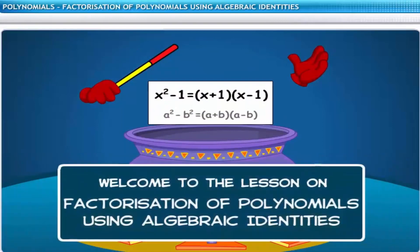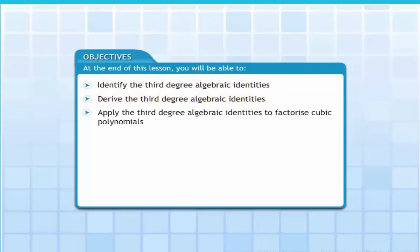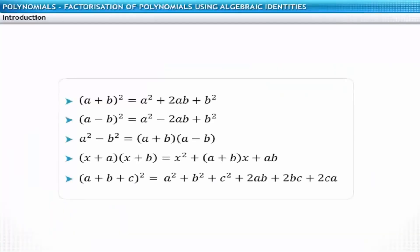Welcome to the lesson on factorization of polynomials using algebraic identities. At the end of this lesson, you will be able to identify and arrive at the third degree algebraic identities, and apply these identities to factorize cubic polynomials. You must be familiar with the algebraic identities of second degree listed here, which can be used to factorize quadratic polynomials.